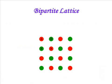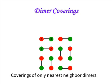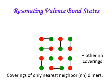Let us begin by describing a bipartite lattice. It consists of two types of sites — we have colored them red and green. The red sites are surrounded by green ones and vice versa. There is a singlet, also called a dimer, from each red site to a neighboring green site, and there are many ways to do so. We cover the entire lattice with such dimers, considering only nearest neighbor dimers. There are many such coverings of a given lattice.